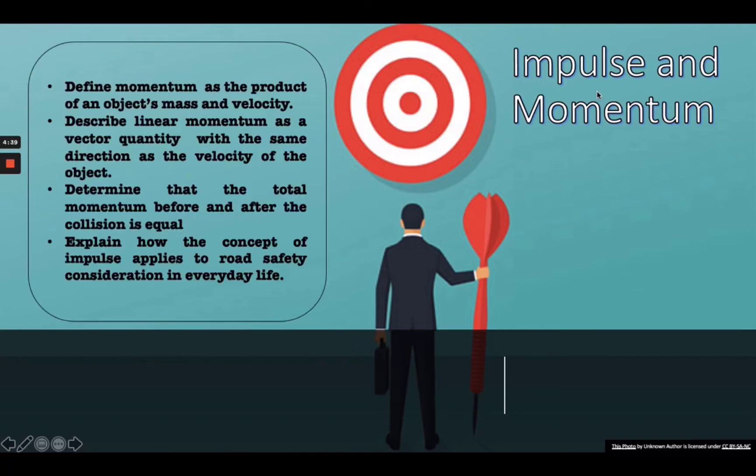At the end of the lesson, you should be able to define momentum as the product of an object's mass and velocity, describe linear momentum as a vector quantity with the same direction as the velocity of the object, determine that the total momentum before and after the collision is equal, and explain how the concept of impulse applies to road safety considerations in everyday life.